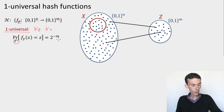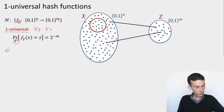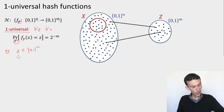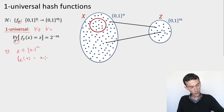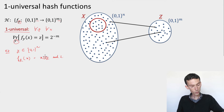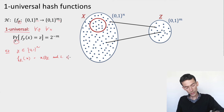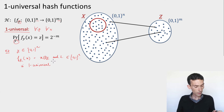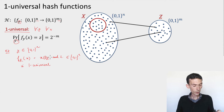Let's find an example. We could take y to be also an n-bit string, and then take f_y of x to be the bit-by-bit XOR of x and y: x XOR y. In this case we get an n-bit output. This is one-universal, because even if I fix x, if I choose a random y, the value of the function on x will be uniformly distributed, since we take the XOR with a uniformly random string.